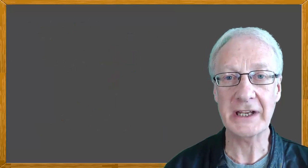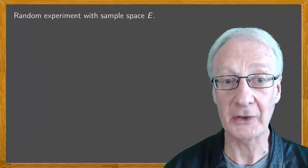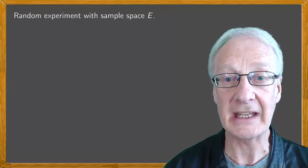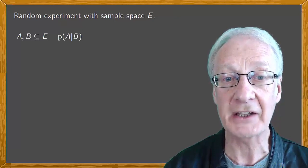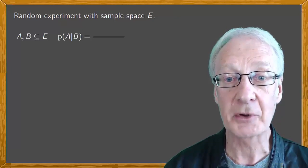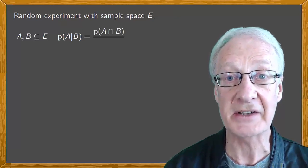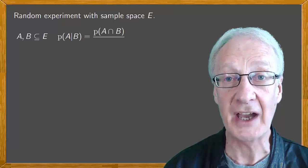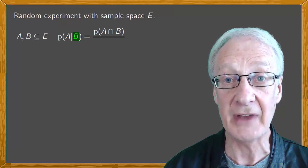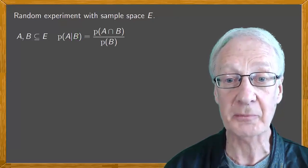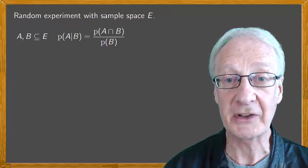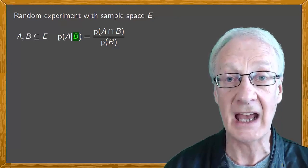In general, if we consider a random experiment with sample space E and two events A and B, we can define the probability of A conditional on B as the probability of the intersection, that is the probability of A intersected by B, divided by the probability of the second event, the probability of B.